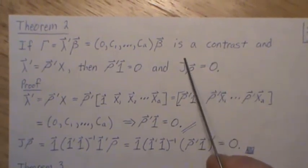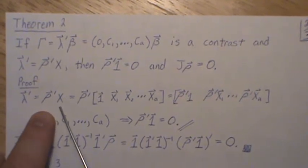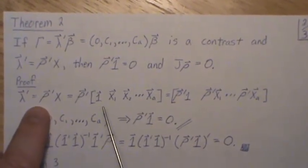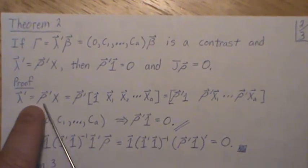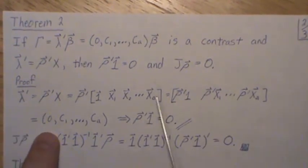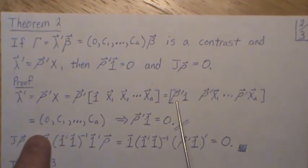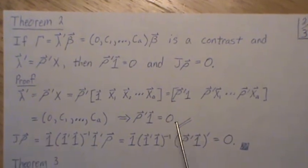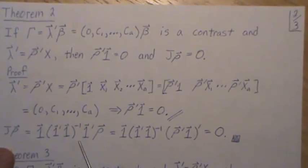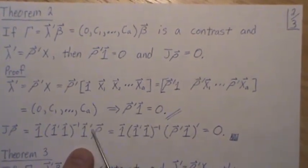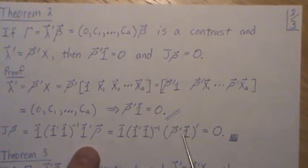At the end of this proof I'll give an alternative proof for this part. Assuming estimability, lambda prime equals rho prime X. Looking at the design matrix X, the first column is all ones followed by x1 through xA. Multiplying through, we know lambda is of the required form, so the first component must equal zero — it's a requirement. That tells us rho prime times one is zero. For J rho: J is the perpendicular projection matrix, and since rho prime one is zero, J rho equals zero as well.